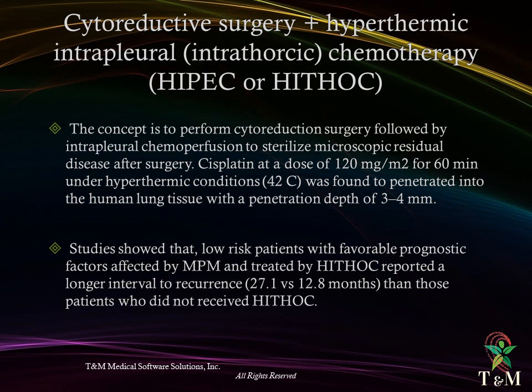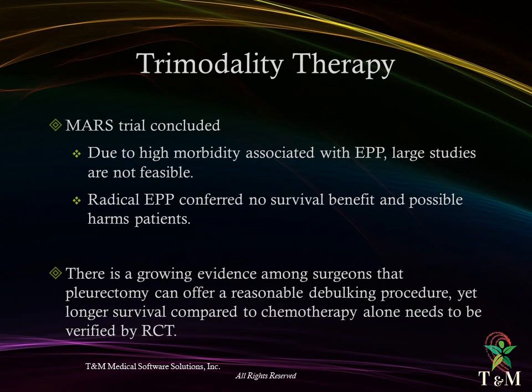Trimodality therapy: the MARS trial concluded that, due to high morbidity associated with extra-pleural pneumonectomy and the absence of large feasible studies, radical extra-pleural pneumonectomy conferred no survival benefit and possibly harmed patients. Therefore, there is growing evidence among surgeons that pleurectomy can offer reasonable debulking, yet longer survival compared to chemotherapy alone needs to be verified by randomized controlled trials.